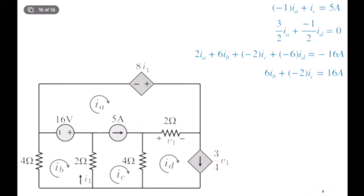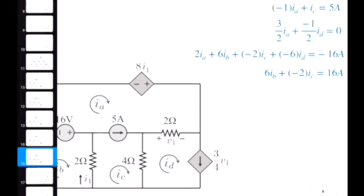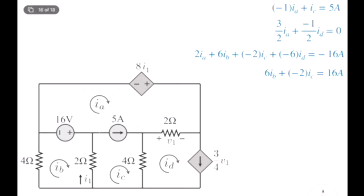Now we have four equations and four unknowns. With four unknowns it's technically hard to solve by hand using the elimination method. The best approach is to write a matrix equation for this system.